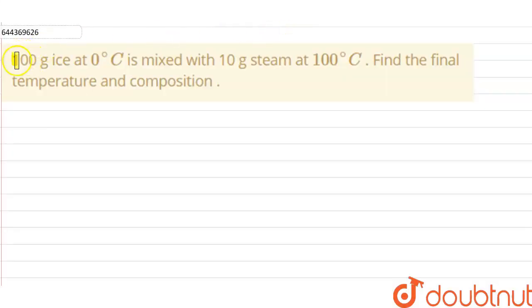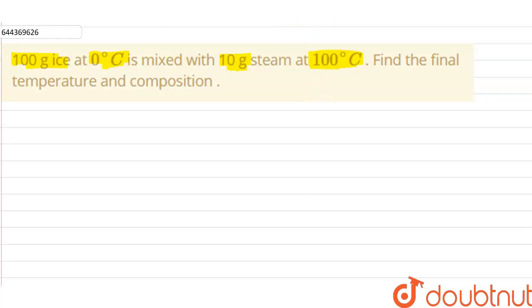Our question is: 100 grams of ice at 0°C is mixed with 10 grams of steam at 100°C. Find the final temperature and composition of the mixture.